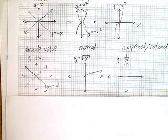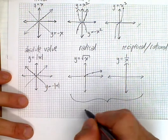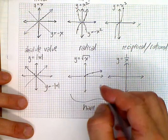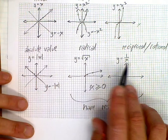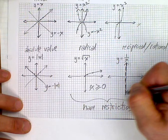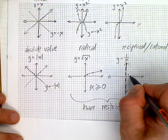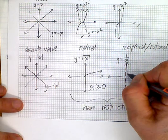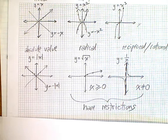The last function is called the reciprocal or rational function. These last two have restrictions. Here, your domain, x has to be greater than or equal to 0. The only thing you can't have here is 0. So we have an asymptote that runs right down the middle. x can't be 0. If x is 1, 1 over 1 is 1. 1 over 2 is a half. If x is a half, 1 over 1 half is 2. You end up with a graph that looks like this.